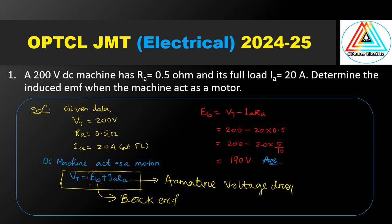The armature voltage drop IaRa is present in a DC motor. Terminal voltage is available. We need to find Eb. IaRa moves to the other side — it becomes negative. So the formula is: back EMF Eb equals Vt minus IaRa.